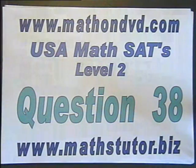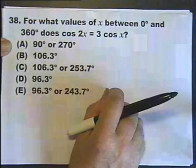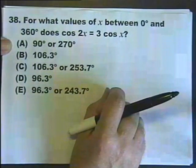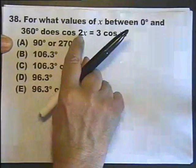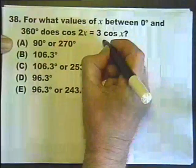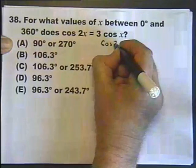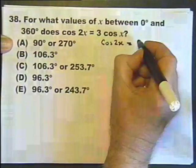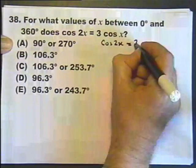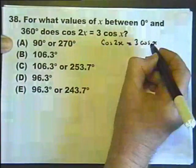Math SAT Level 2, Question 38: For what values of x between 0 and 360 degrees does that equal that? The first thing to notice is that one side is in 2x whereas the other is in just x, which is not a good thing.